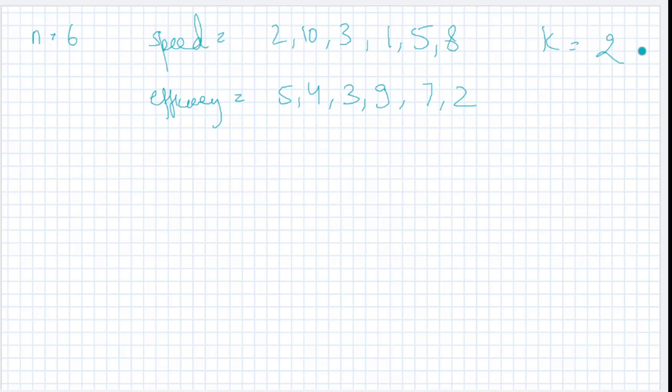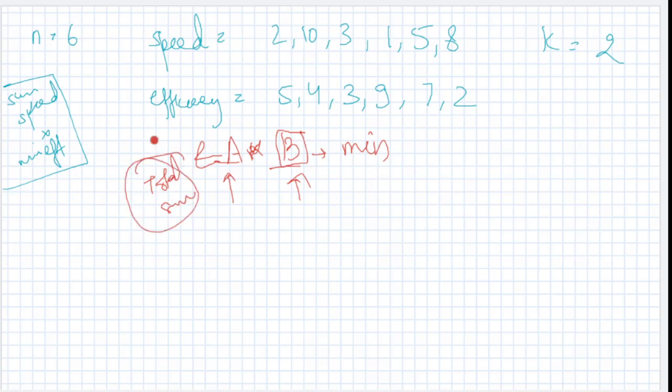We know one thing: we have to sum the speeds and multiply with minimum efficiency to maximize this. If you talk mathematically, to maximize a multiplication, both of them should be as high as they can. But we have been told that this would be the minimum value of all the engineers you choose. Obviously, whatever you're going to select, the sum should be higher and this minimum should be higher.